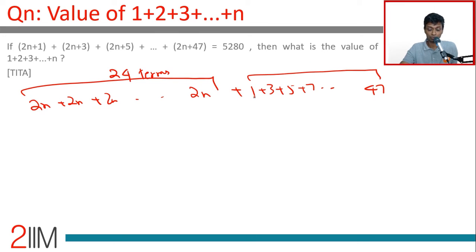24 terms. This is (2-1) + (4-1) + (6-1) + (8-1) + ... + (48-1). Each term is an even number minus 1. This is 24(2n) plus 24 terms equals 5280. The odd numbers...